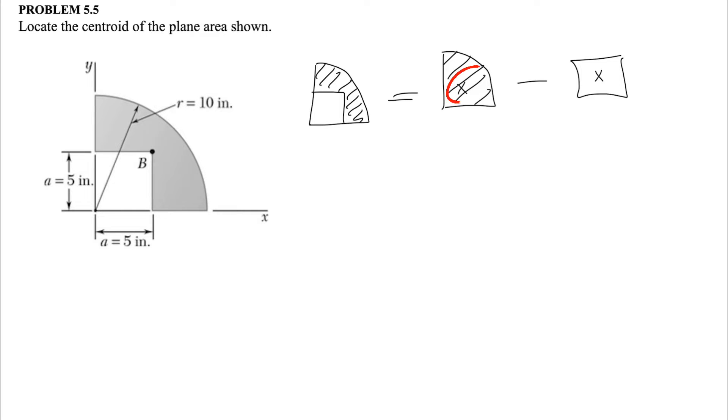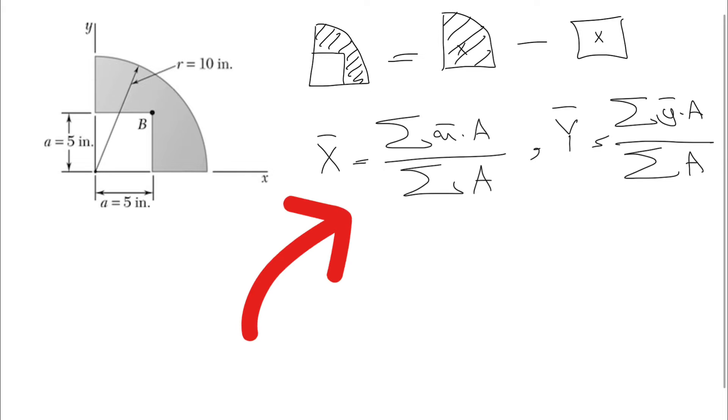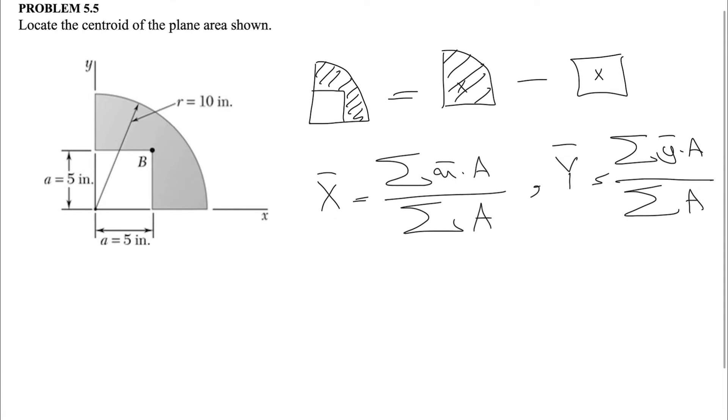What we need to do in here is to find the centroid for the quarter circle, and we need to also find the centroid for the square. After that, we're going to find the center of gravity. We know for a centroid, if you want to find the x component, we'll have these two formulas for finding x and y. Based on these, all we need to do is to find the centroid of each component and the area.